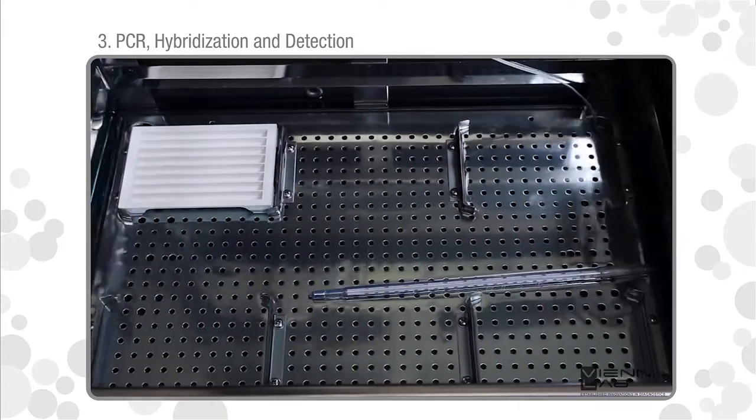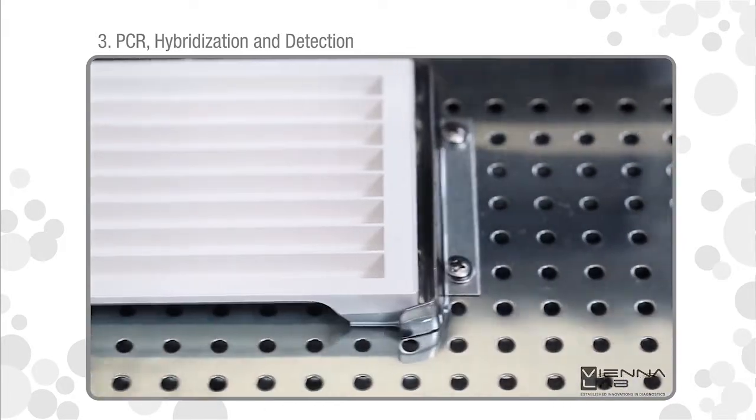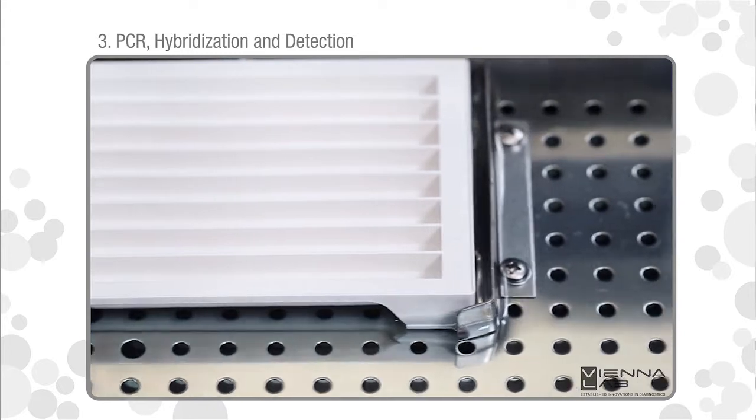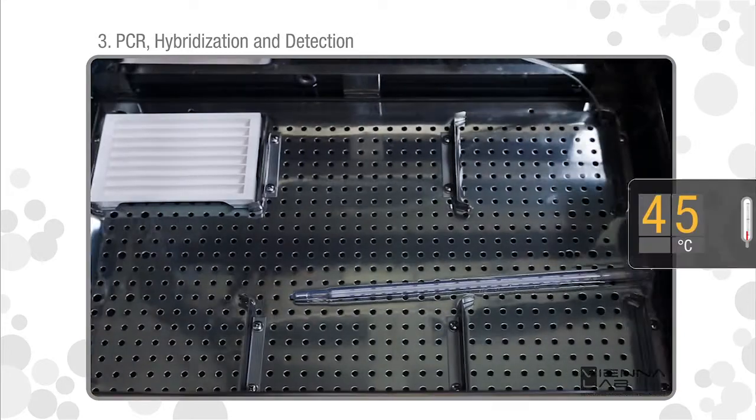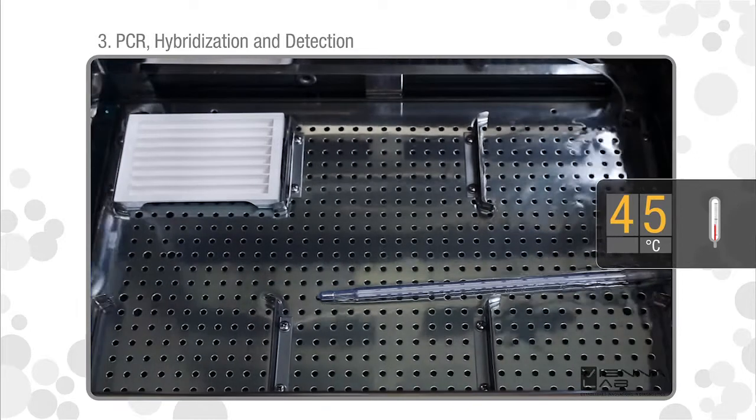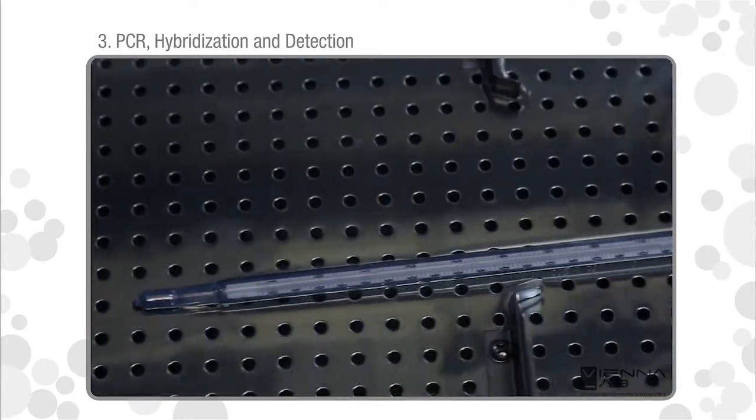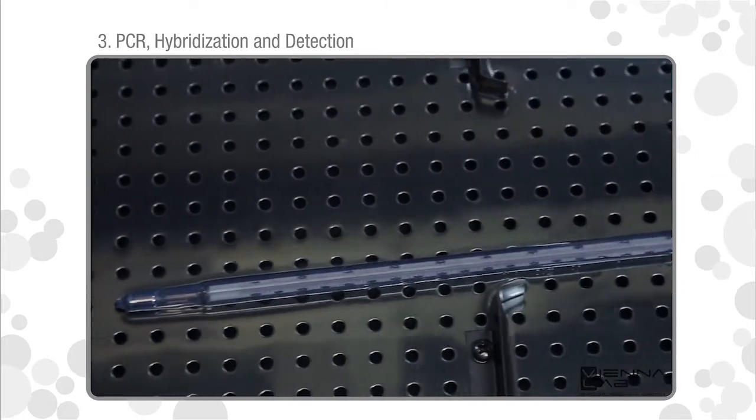Use a shaking water bath. Adjust the water level to approximately half of the height of the typing tray. Heat to exactly 45 degrees Celsius. Check water temperature with a calibrated thermometer.